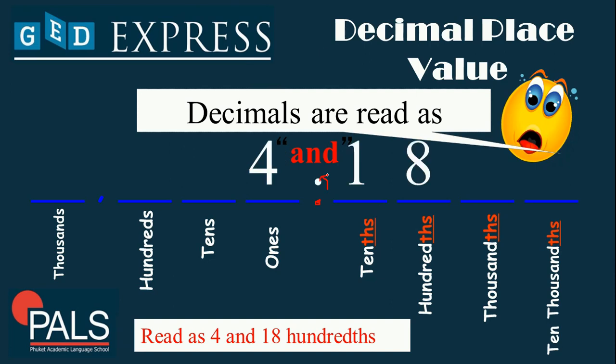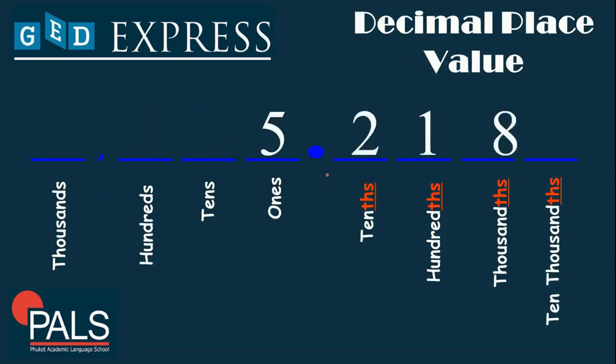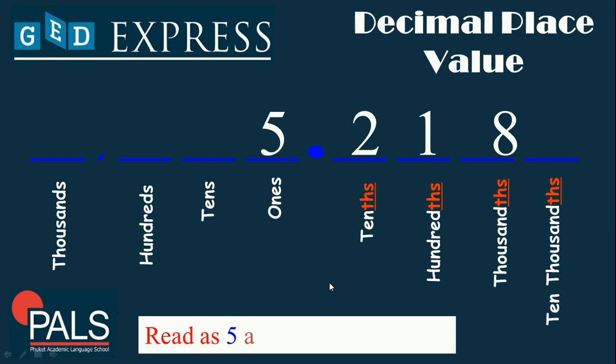For example, we have the number 4.18. We read that as '4 and 18 hundredths.' Now suppose we have 5.218 — 2 is in the tenths place, 1 is in the hundredths place, and 8 is in the thousandths place. We read this as '5 and 218 thousandths.'